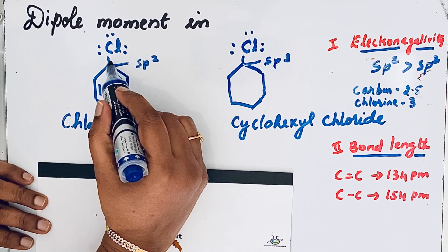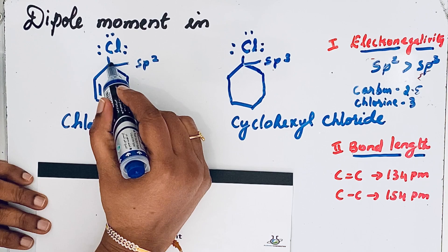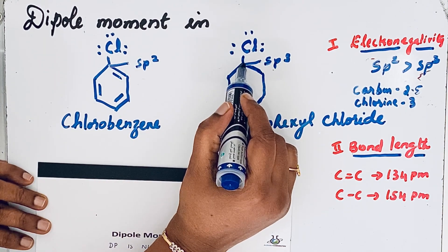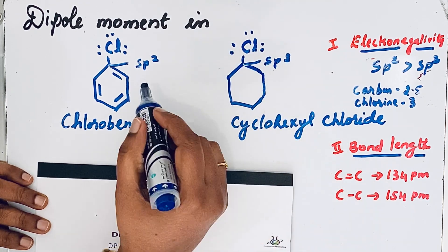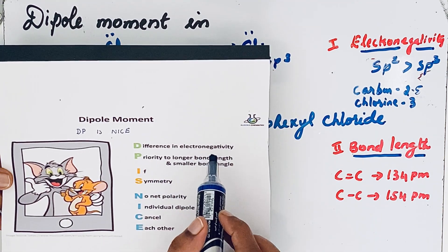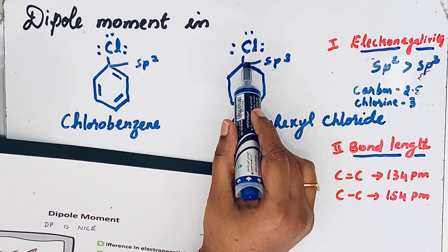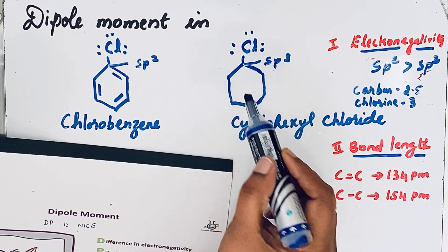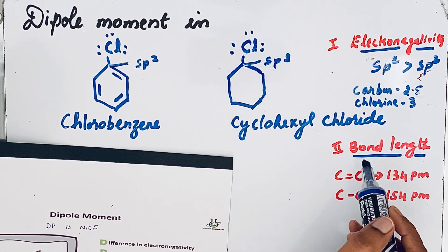In chlorobenzene, the sp2 carbon has more electronegativity compared to the sp3 carbon of cyclohexyl chloride. This means the electronegativity difference between carbon and chlorine is smaller in chlorobenzene than in cyclohexyl chloride. Since greater difference in electronegativity leads to greater dipole moment, the sp3 hybridized carbon of cyclohexyl chloride gives it a greater dipole moment.